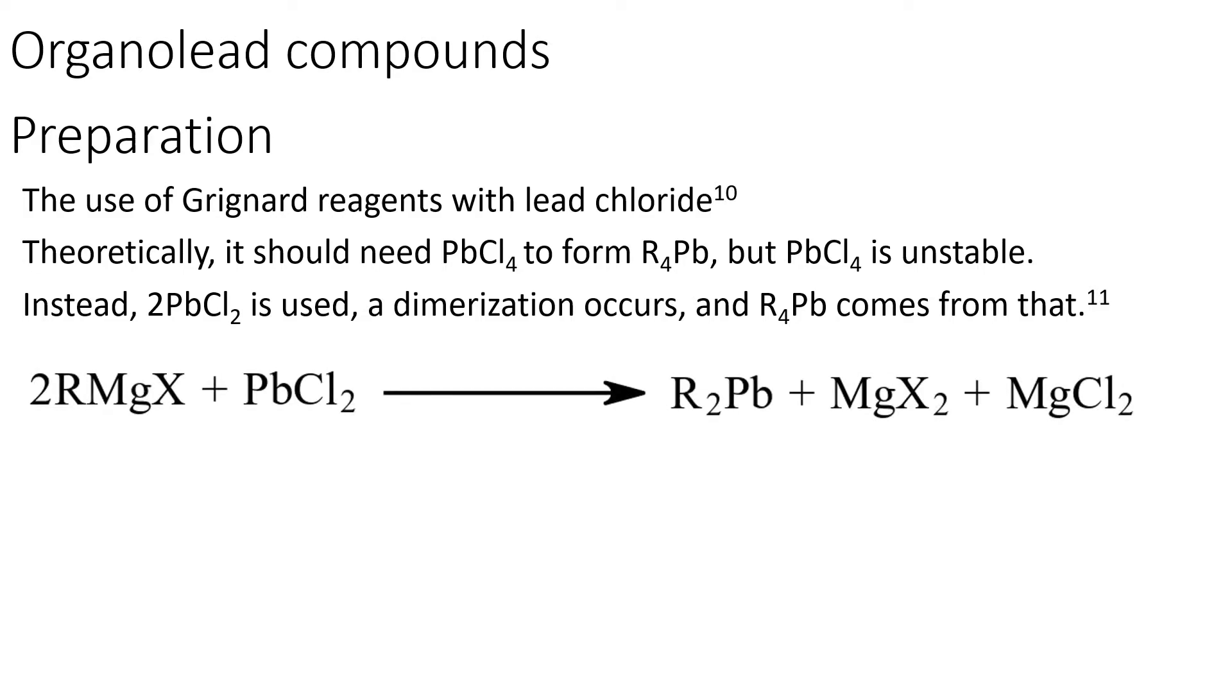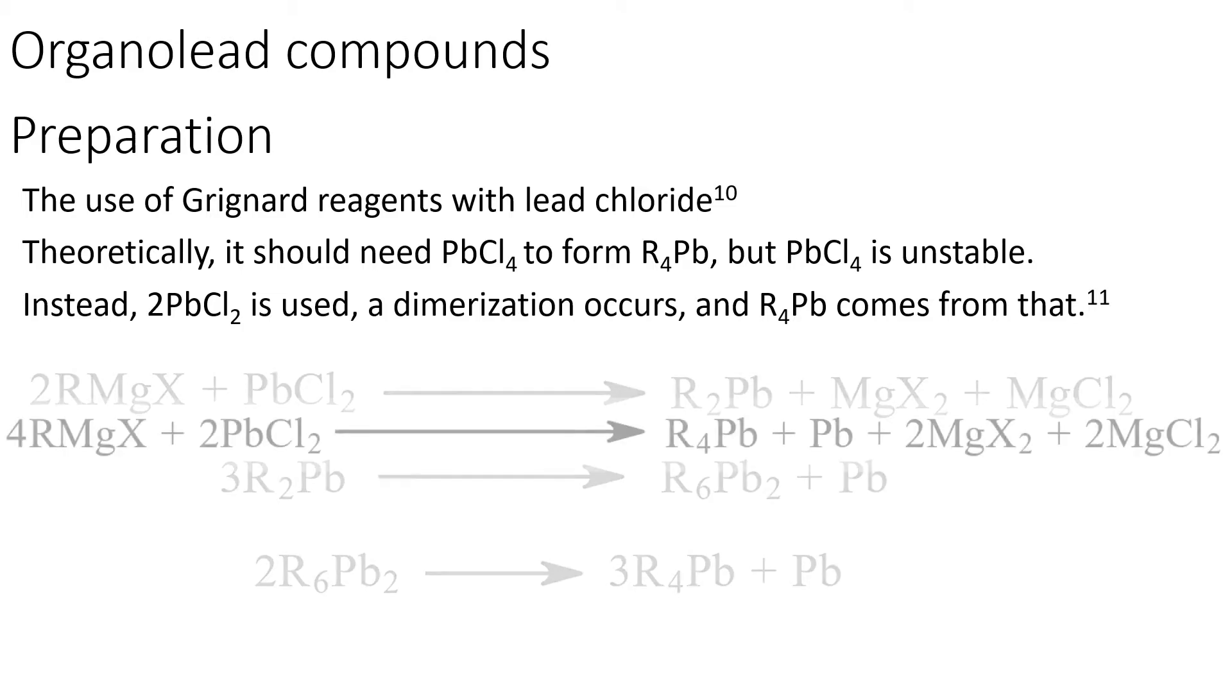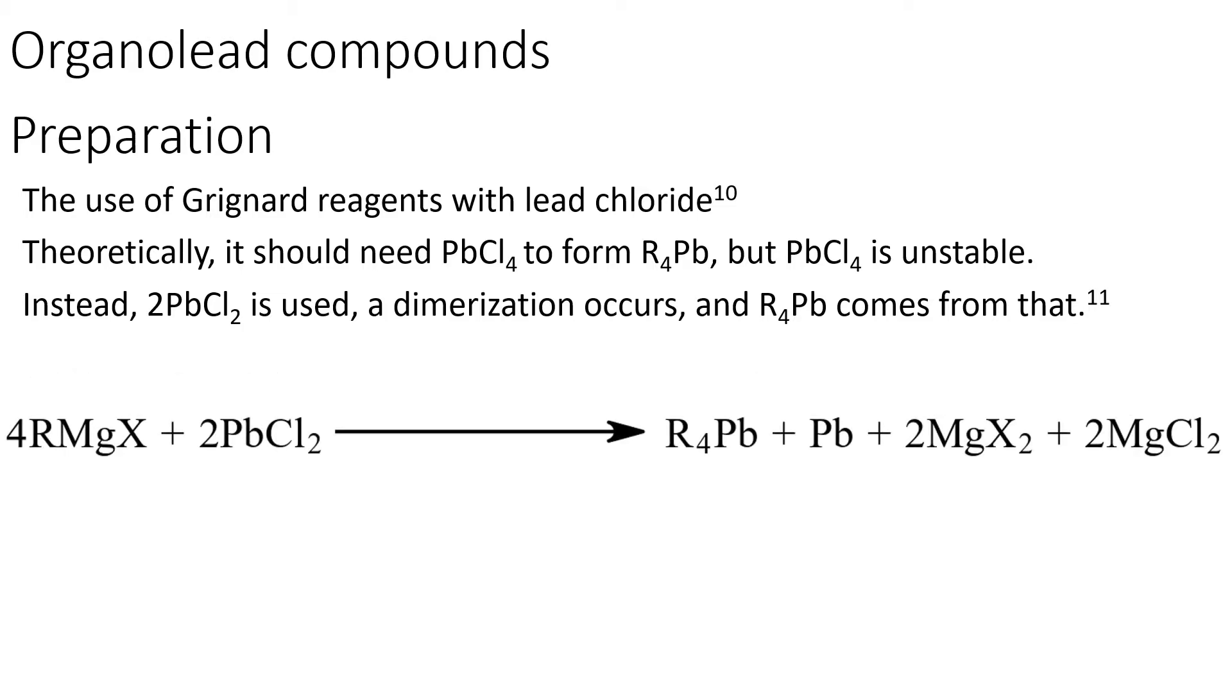Fortunately, lead dichloride can still be used due to the fact that, due to this middling process where a dimer is formed between two previously reacted dialkyl lead compounds, which then expel lead to form your tetraalkyl lead compound in this overall reaction here.